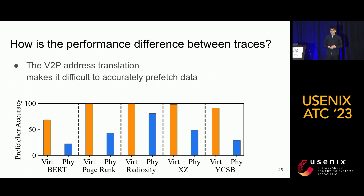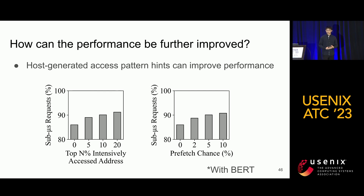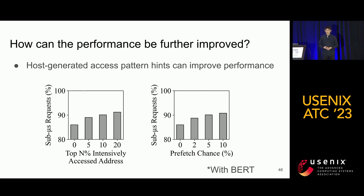Finally, let's check the impact of virtual-to-physical address translation on device performance. When we switch from virtual traces to physical traces, the prefetcher has a hard time actually prefetching data. To solve this, our work assumes a clairvoyant kernel that has knowledge of the application's access pattern and generates hint memory requests to the device to help it move data from the flash backend to the cache early. As the results show, this method can potentially improve device performance.